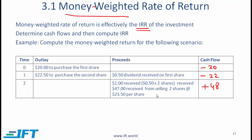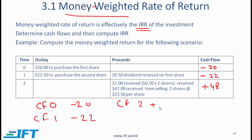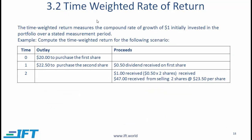So what is the IRR? In your financial calculator, enter cash flow 0 as minus $20, cash flow 1 as minus $22, and cash flow 2 as plus $48, then compute the IRR. What you should get is an IRR of 9.39%.